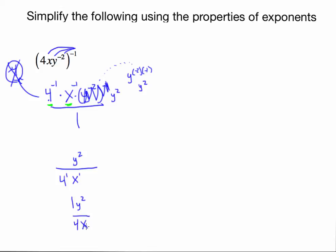Writing this in a clearer way: I have 1 times y squared over 4x. I wrote it as 1y just so you can see we have a coefficient of one-fourth — we're taking 1 and dividing by 4 — and I wrote x to the first simply as x.